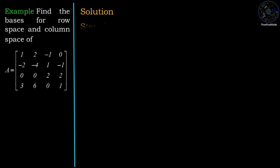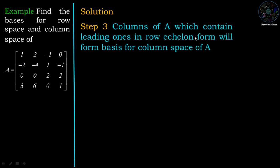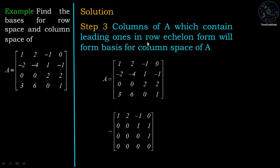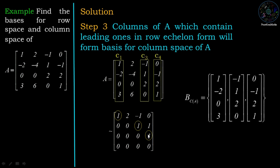Now step 3: the columns of A which contain leading ones in row echelon form will form a basis for the column space of A. In the row echelon form, we find the leading ones, which are contained in column 1, column 3, and column 4. So the corresponding columns of A — C1, C3, and C4 — will form a basis for the column space of A.